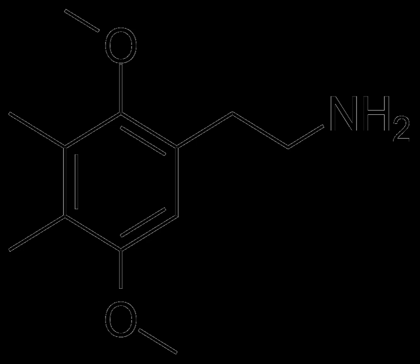== Homologues == Several homologues of 2CG were also synthesized by Shulgin. These include 2CG-3, 2CG-5, and 2CGN. Some, such as 2CG-1, 2CG-2, 2CG-4, and 2CG-6, are possible to synthesize in principle but impossible or extraordinarily difficult to do so in practice.